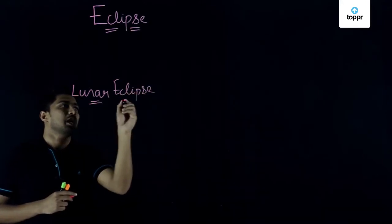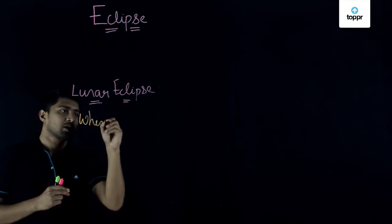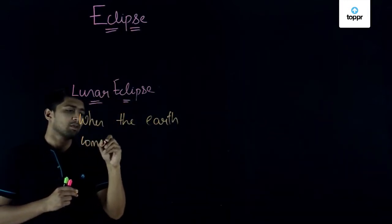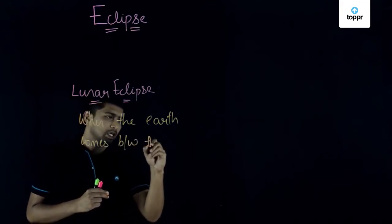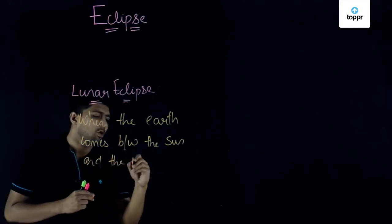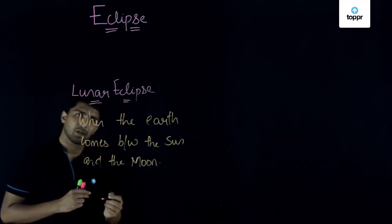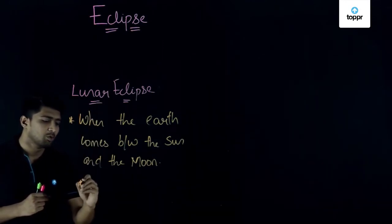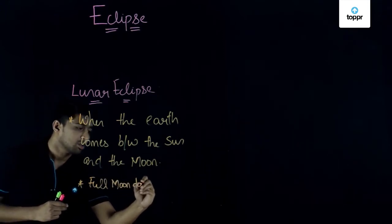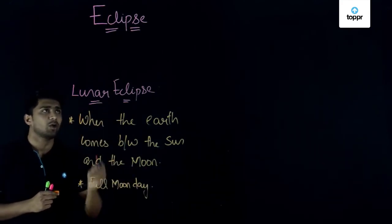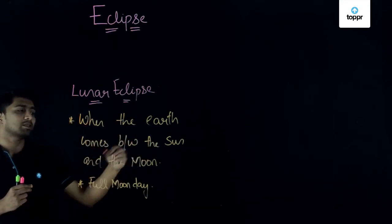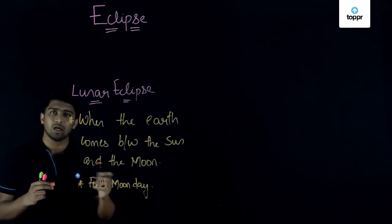When does a lunar eclipse happen? When the earth comes between the sun and the moon, it forms a lunar eclipse. Usually, a lunar eclipse happens on a full moon day. So the main things to know about lunar eclipse: it happens when the earth comes between the sun and the moon, and it usually occurs on the full moon day.